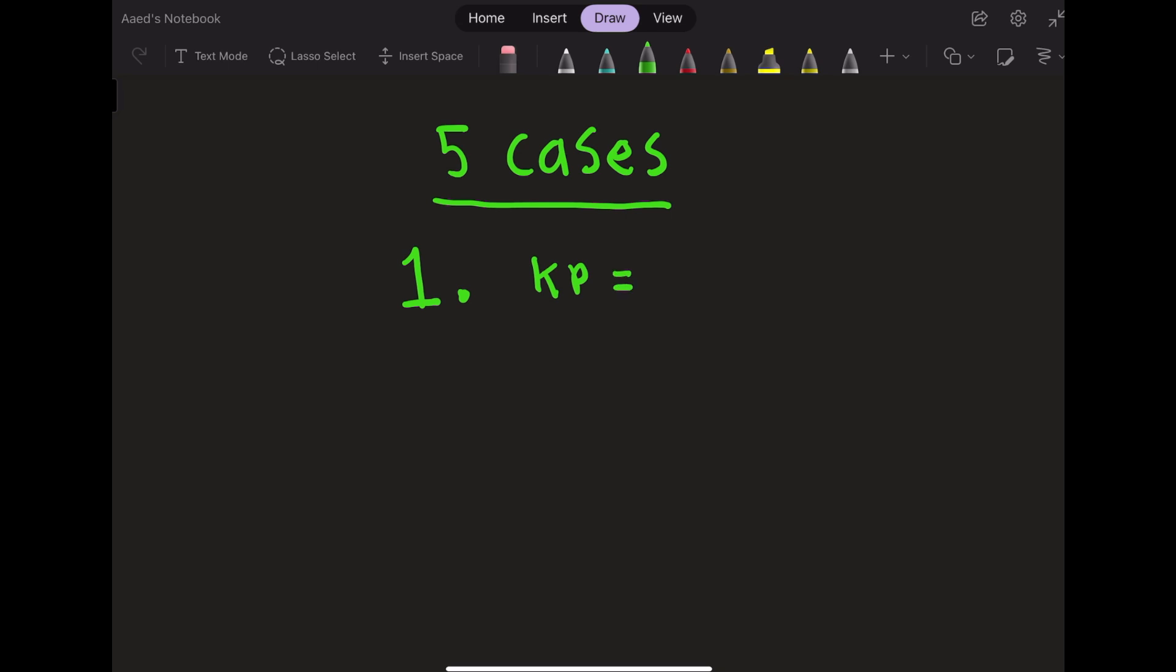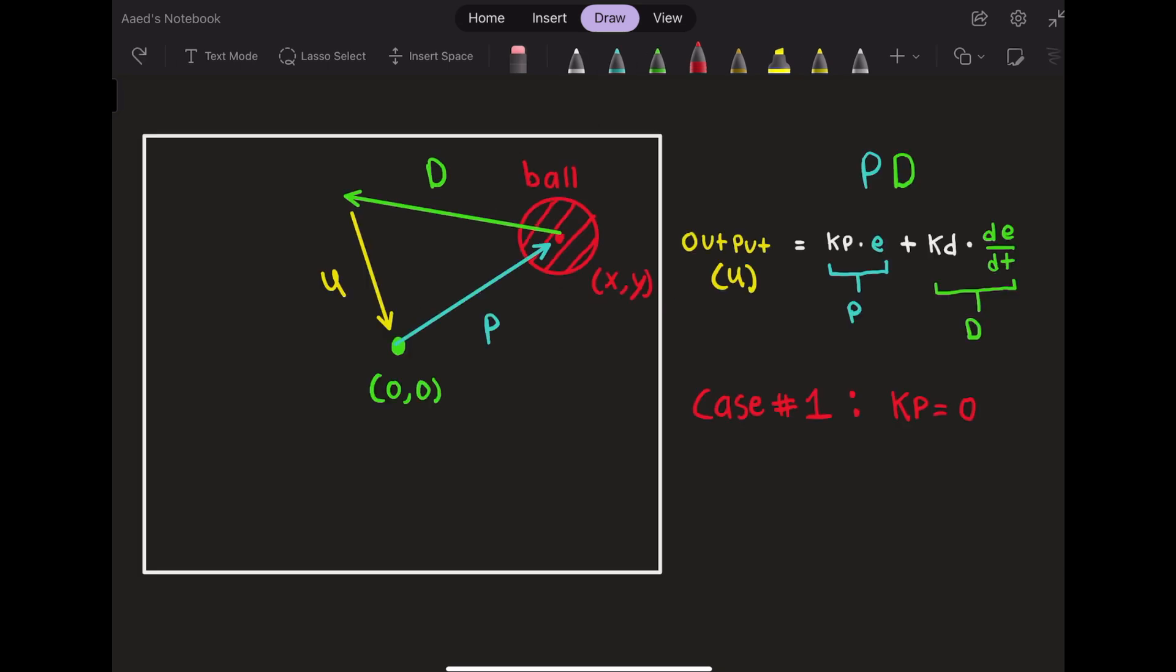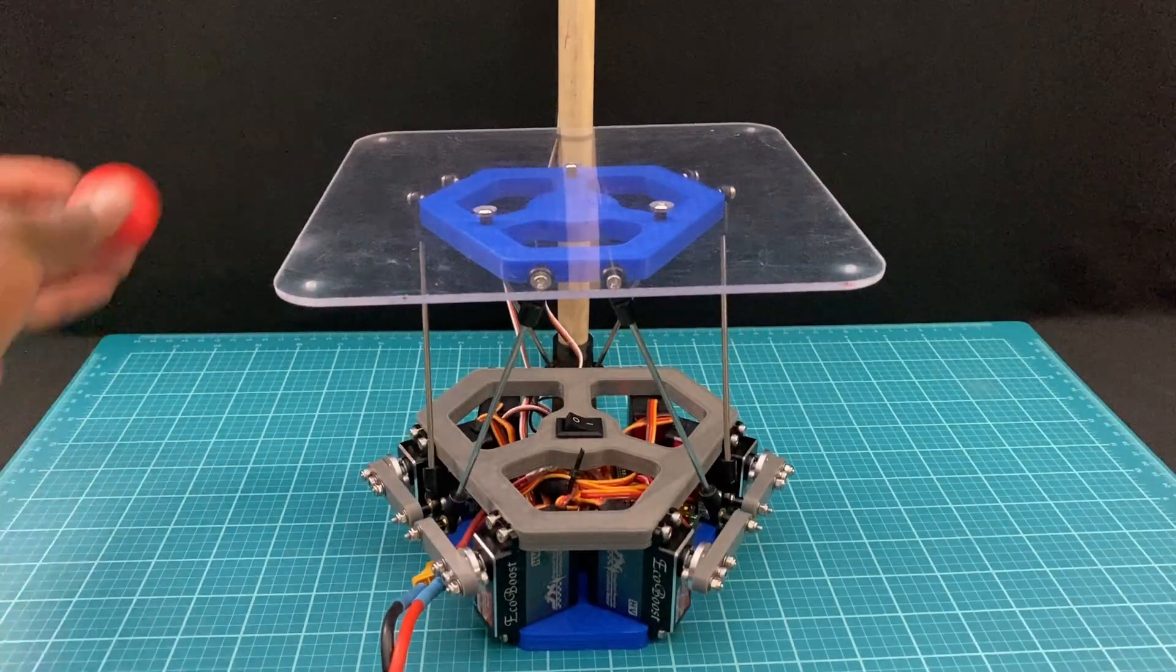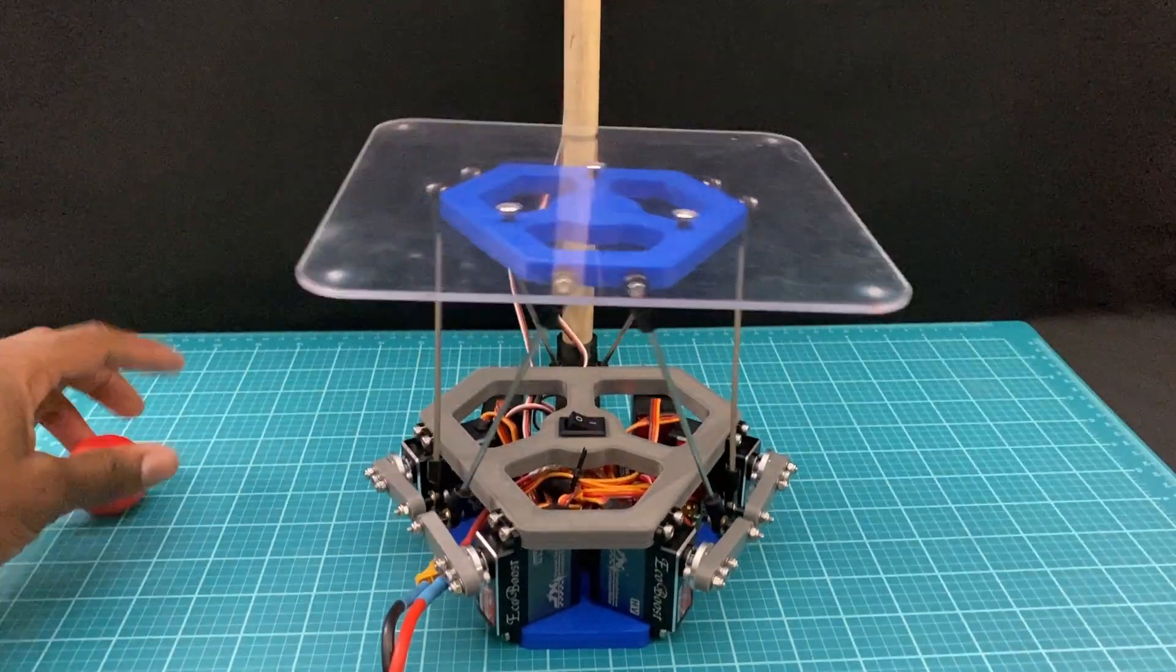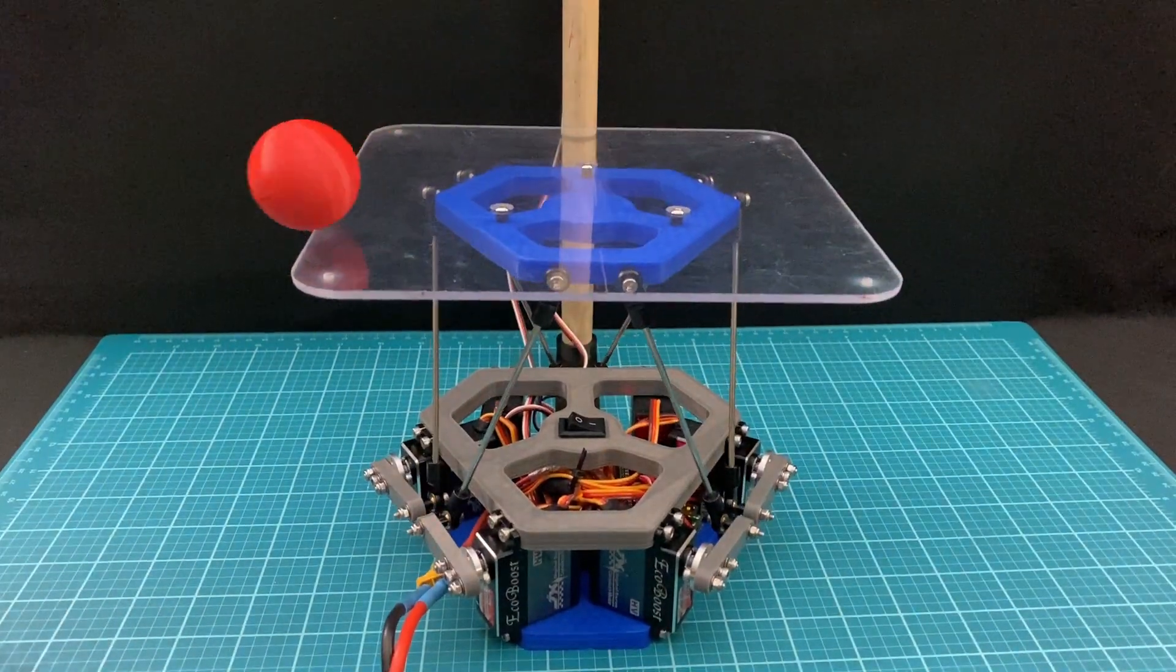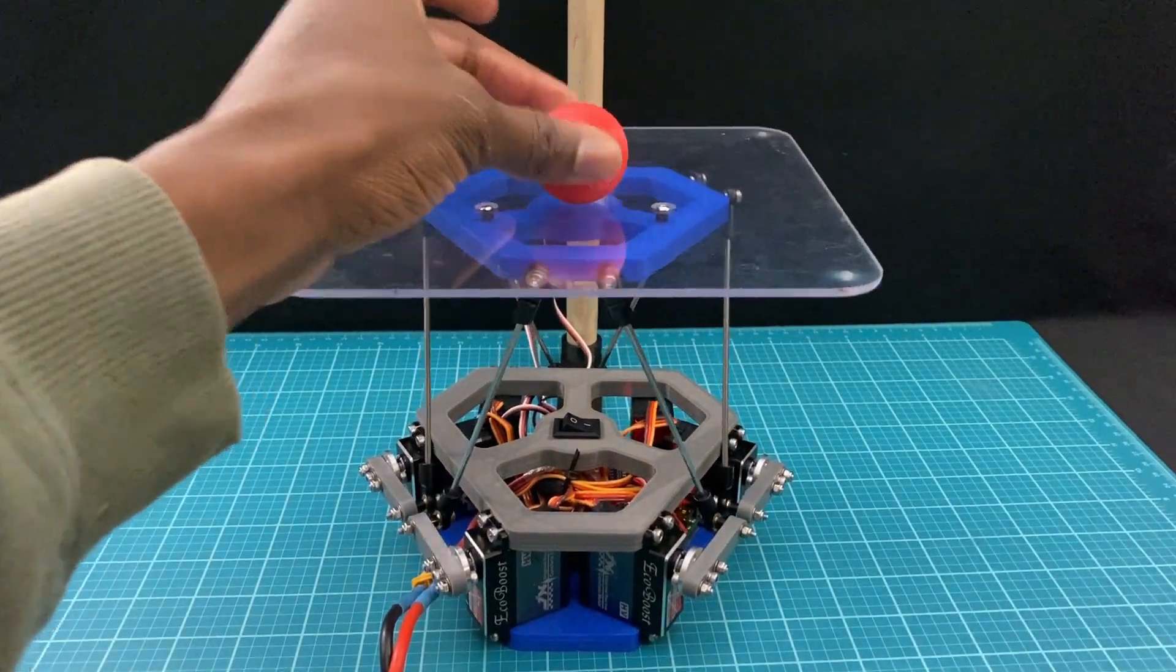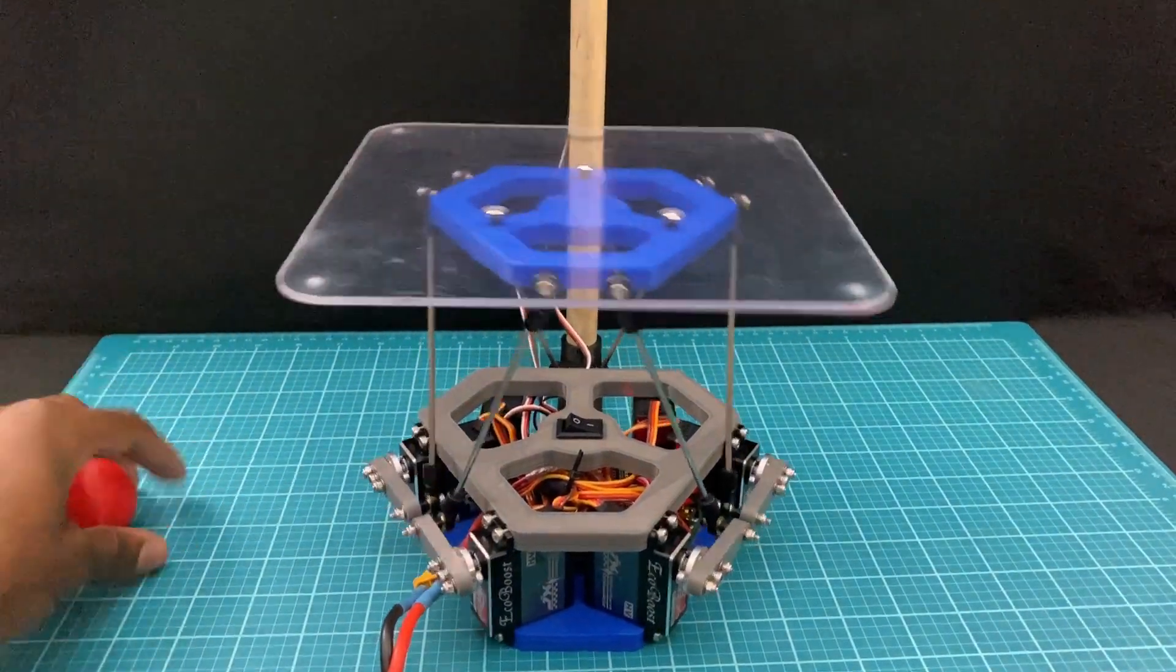The first case happens when kp is set to zero. In this case, there is no proportional term, and the robot only accounts for the velocity of the ball. In other words, the robot will only attempt to slow the ball down. This is ineffective because the aim of the robot is to both slow the ball down and bring it towards the center. If the robot is only slowing the ball down, then the ball will eventually fall off.